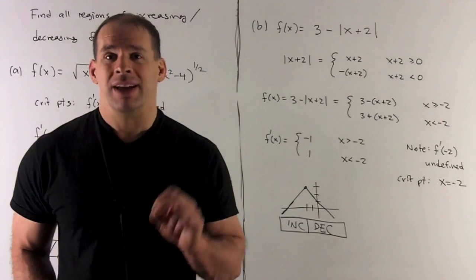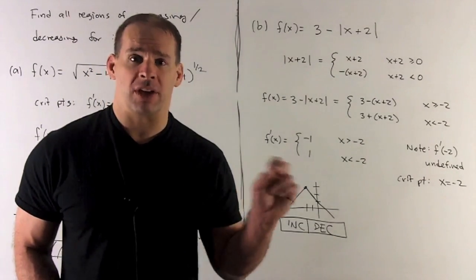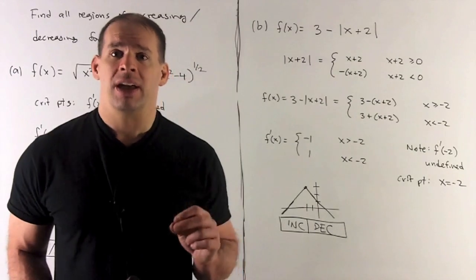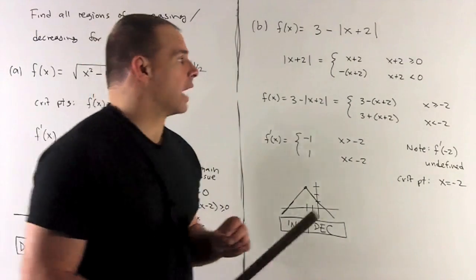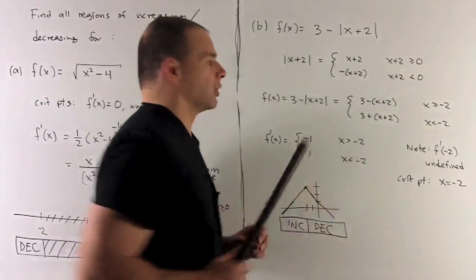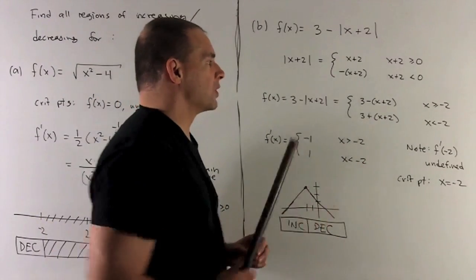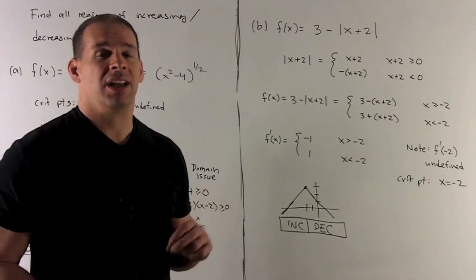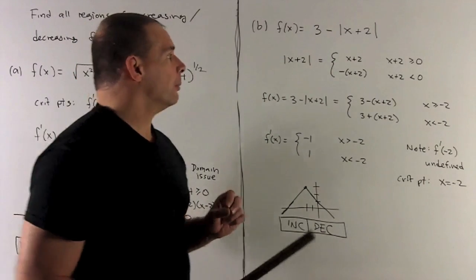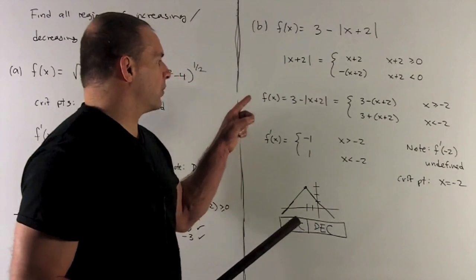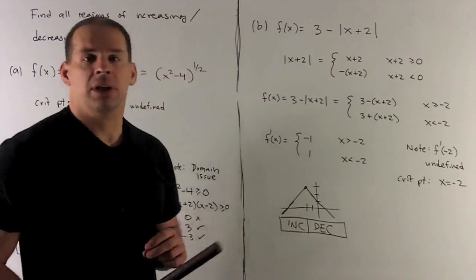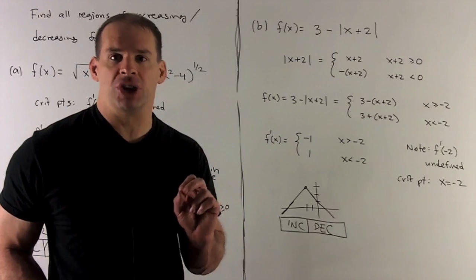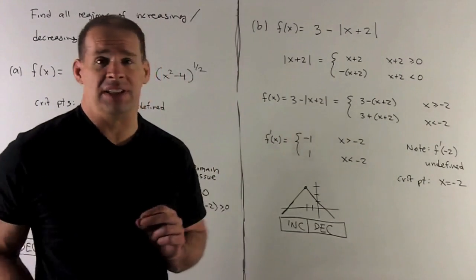The absolute value of (x + 2) equals (x + 2) when x + 2 ≥ 0, and equals -(x + 2) when x + 2 < 0. Simplifying, our two regions are x ≥ -2 and x < -2. So f(x) = 3 - (x + 2) for x ≥ -2, and f(x) = 3 + (x + 2) for x < -2. Written this way, we can easily take the derivative.